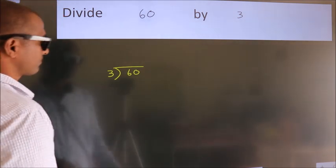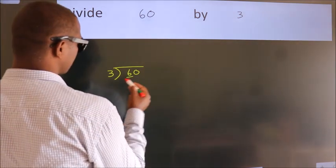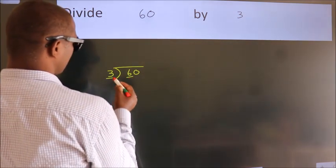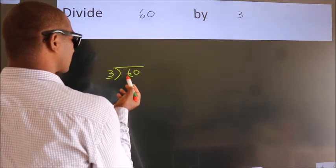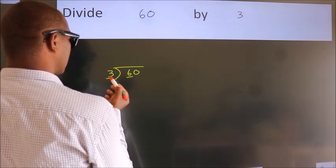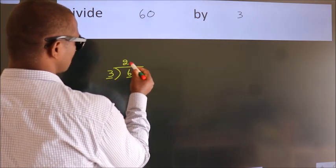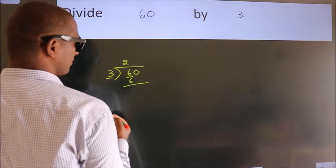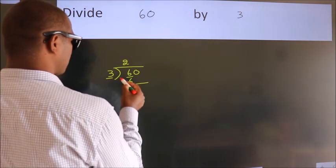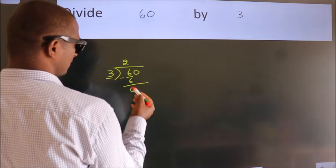Next, here we have 6, here 3. When do we get 6? In the 3 table: 3 twos, 6. Now we should subtract. We get 0.